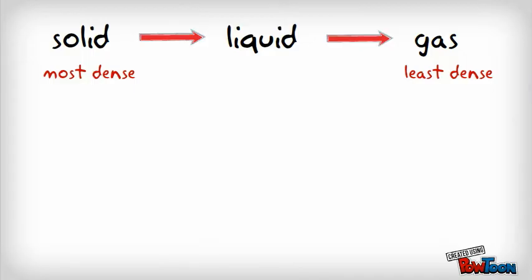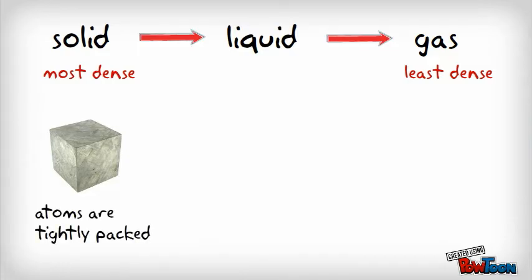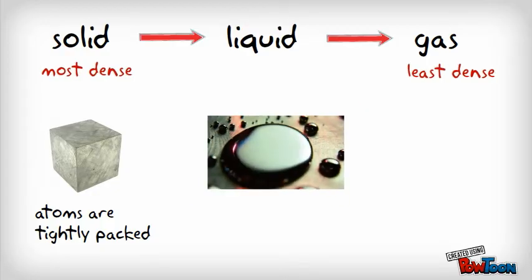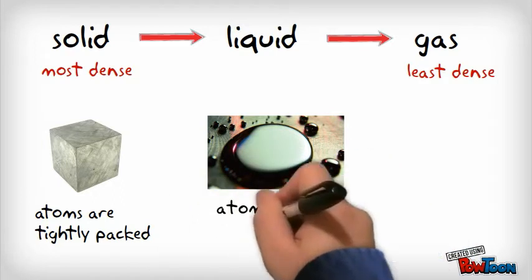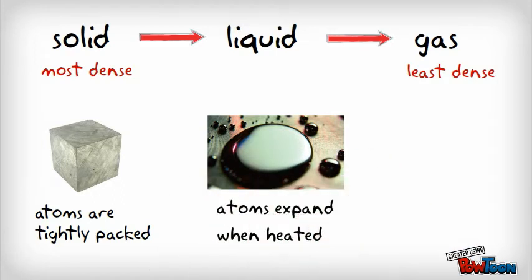Think about a piece of solid metal. When you find metal as a solid, the molecules and atoms are tightly packed together. But if you heat the metal up, and it starts to melt, it will expand. So, since it's expanding, it means the molecules are less tightly packed. And that's why liquid metal is less dense than solid metal.